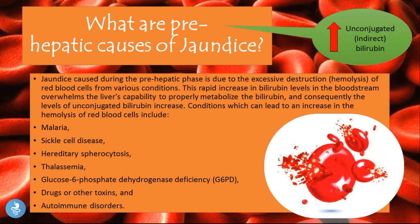In pre-hepatic causes, jaundice is due to excessive destruction or hemolysis of red blood cells. This rapid increase in bilirubin levels overwhelms the liver's capability to properly metabolize the bilirubin, and consequently unconjugated bilirubin levels increase. Conditions include malaria, sickle cell disease, hereditary spherocytosis, thalassemia, G6PD deficiency, drugs or toxins, and autoimmune diseases.